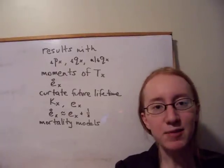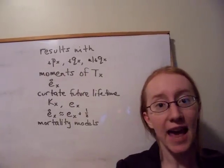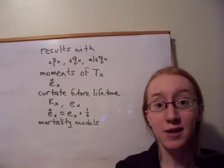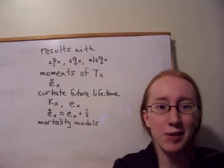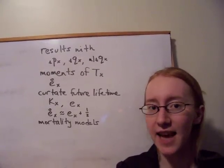From there, we moved on to the curtate future lifetime random variable, which is KX. We had to shift gears a little bit here because KX is a discrete random variable. It measures the number of complete years of future lifetime. Basically, we're just chopping off the decimal of TX, and that gives us KX.